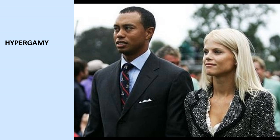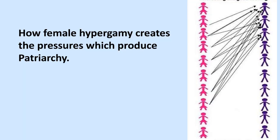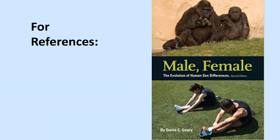It's quite interesting because female processes of selection for mates who have status and resources is actually the force which produces the system called patriarchy, which feminists rail against. If feminists really wanted to get rid of patriarchy, they should start choosing men who didn't have status and resources — but then their children probably wouldn't survive as well. There's also lots of evidence to show that this is indeed how women choose their mates.